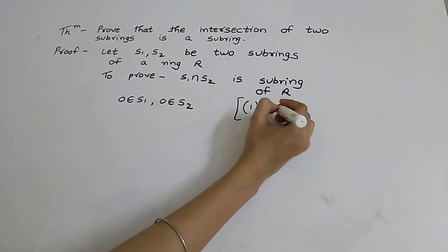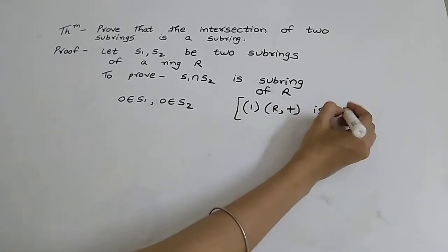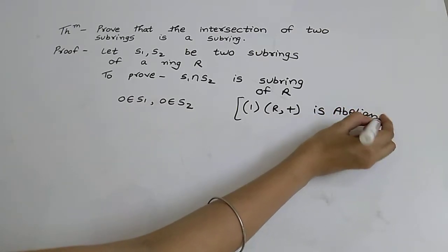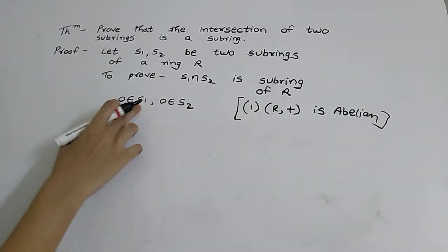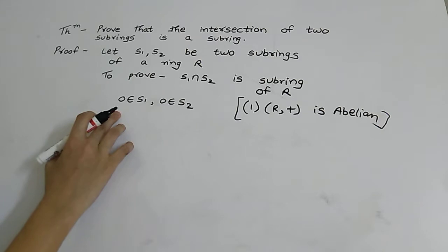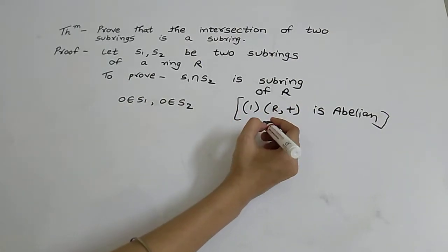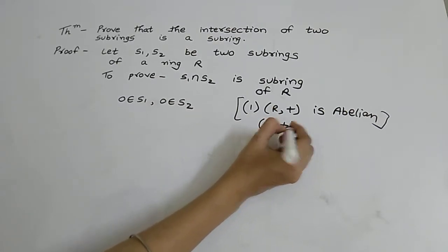So in this case, S1 and S2 under binary operation addition should be abelian groups, and to prove abelian group, one property is that R under addition is a group.